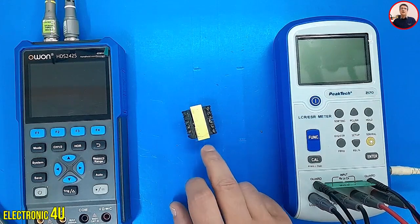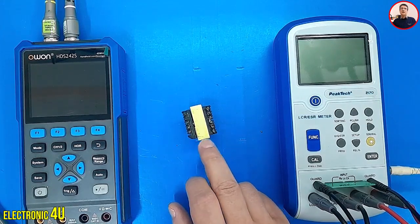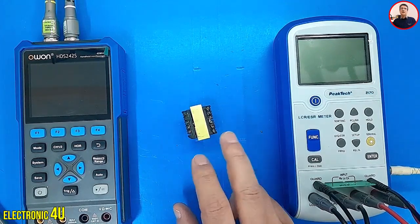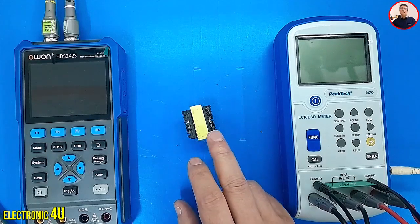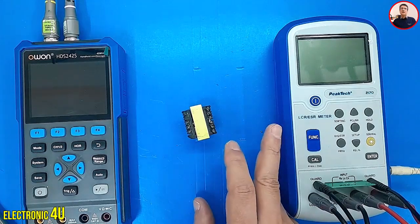What matters to us is the transformer's performance when it's in a circuit. Therefore, to test the health of a transformer, it's better to use an LCR meter.